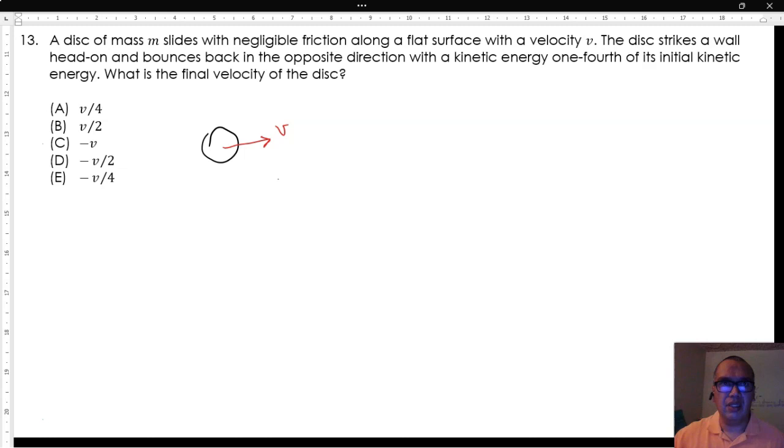The only thing we care about is that initially the disk has a mass M and a velocity V. So the kinetic energy is one-half M V squared.